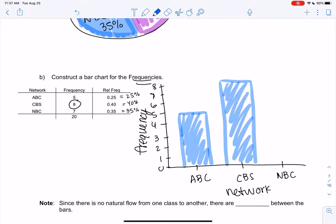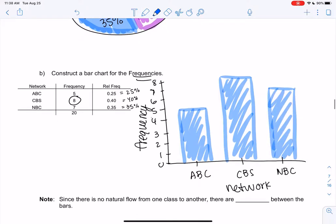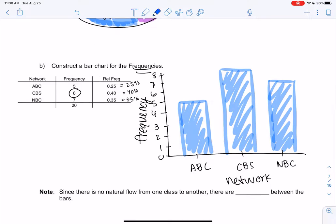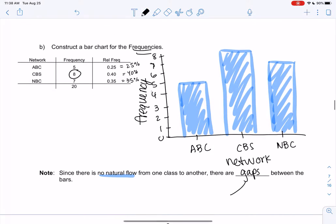So I did do gaps because there's no natural flow like numbers have. A nice flow: zero, one, two, three, right? There's no reason like ABC flows into CBS, so we have gaps. Gaps, so with categorical data there's always gaps. Numerical does not. So that's our last bar graph, we'll start a new graph in the next video.